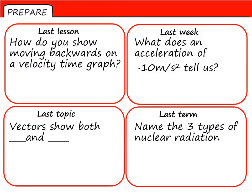Number one: how do you show an object moving backwards on a velocity-time graph? Number two: what does an acceleration of minus 10 meters per second squared tell us about the object in question? Number three: vectors show both what and what? And finally, all the way back from P4, can you name three types of nuclear radiation?